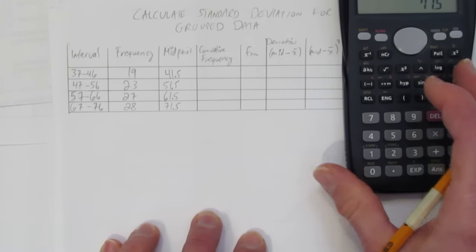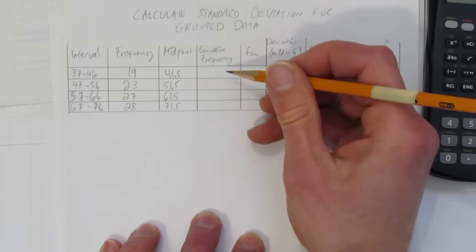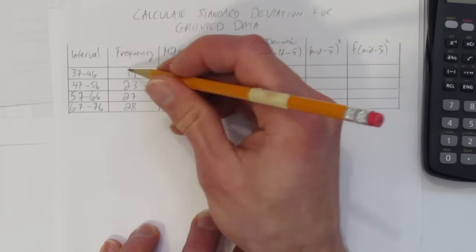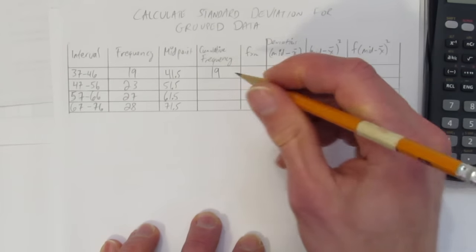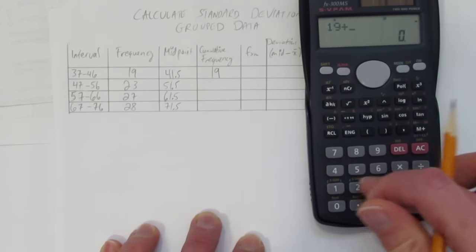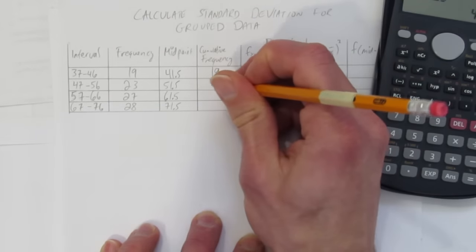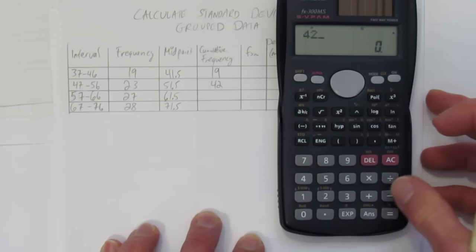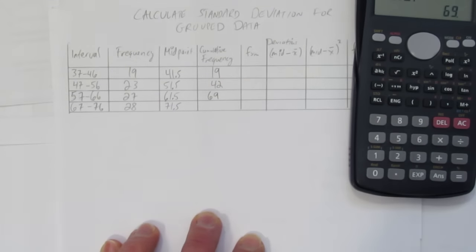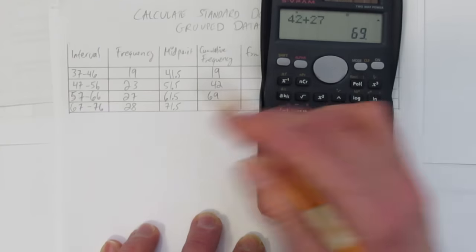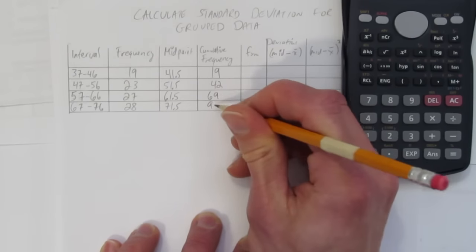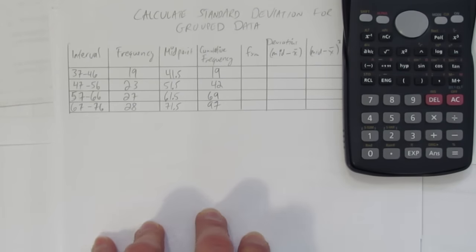The next thing is to count up the cumulative frequency. We actually probably won't use it, but it's good to have for some other applications. So up until this point, we've seen 19 things. And then to this point, we've seen 19 plus, you can probably do that in your head without a calculator. We've seen 42 things. 42 plus 27 means we've seen 69 things. And now we've seen 69 things plus 28 gives 97. So we've seen 97 items so far.